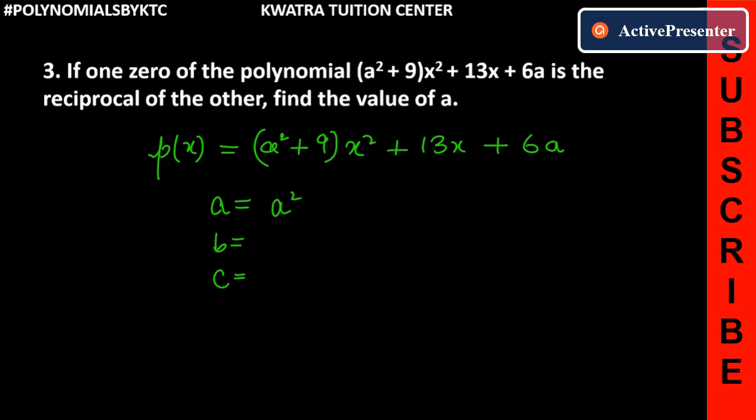So, the a value is (a² + 9), which is the coefficient of x², that is the value of a. Now, b value is 13, which is the coefficient of x. c is our constant term, the constant term is 6a.